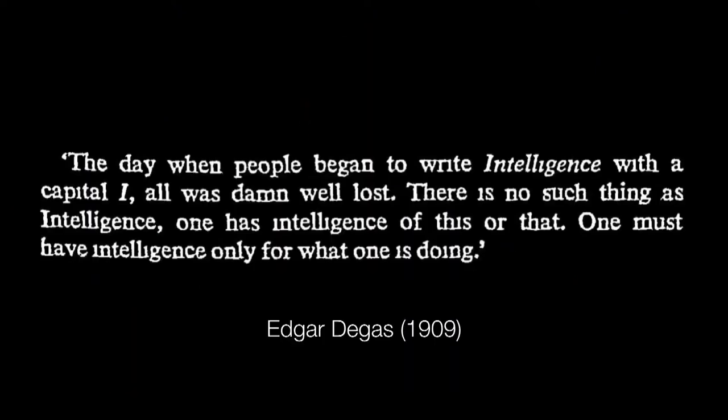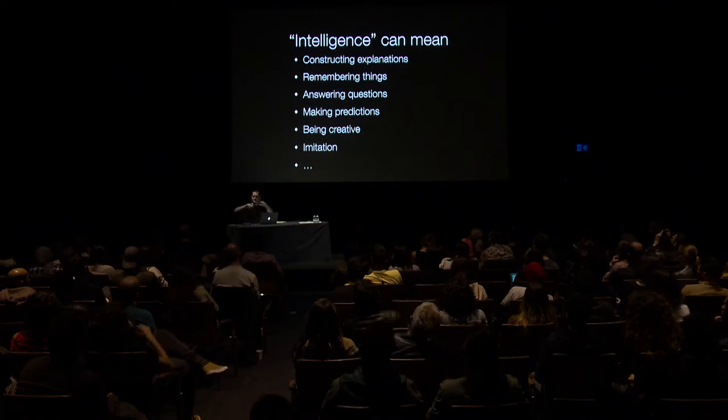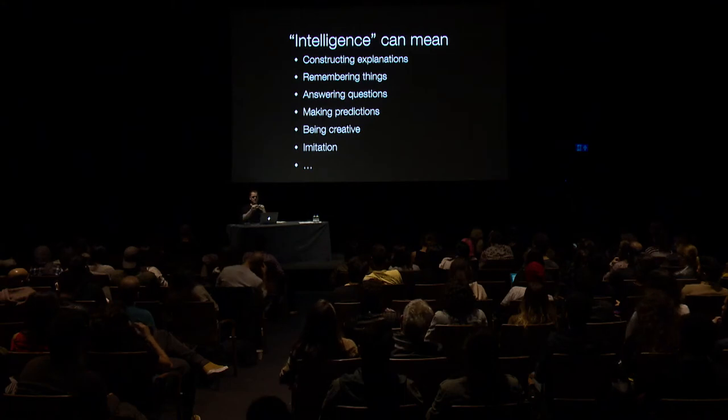I like this quote from Edgar Degas, the artist, who in 1909 wrote: 'The day when people began to write Intelligence with a capital I, all was lost. There is no such thing as capital-I intelligence. One has lowercase-i intelligence for doing this or that; one must have intelligence only for what one is doing.' I tried to list out what some of these different kinds of intelligence can be in humans: constructing explanations, remembering things, answering questions, making predictions, being creative, imitation. Intelligence isn't just one of these things — each is one aspect of intelligent behavior.